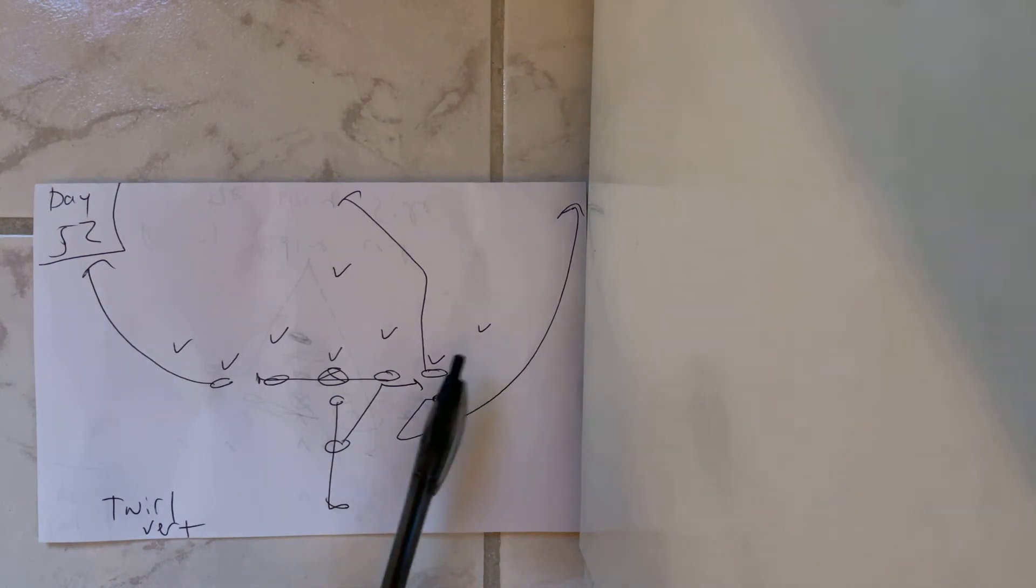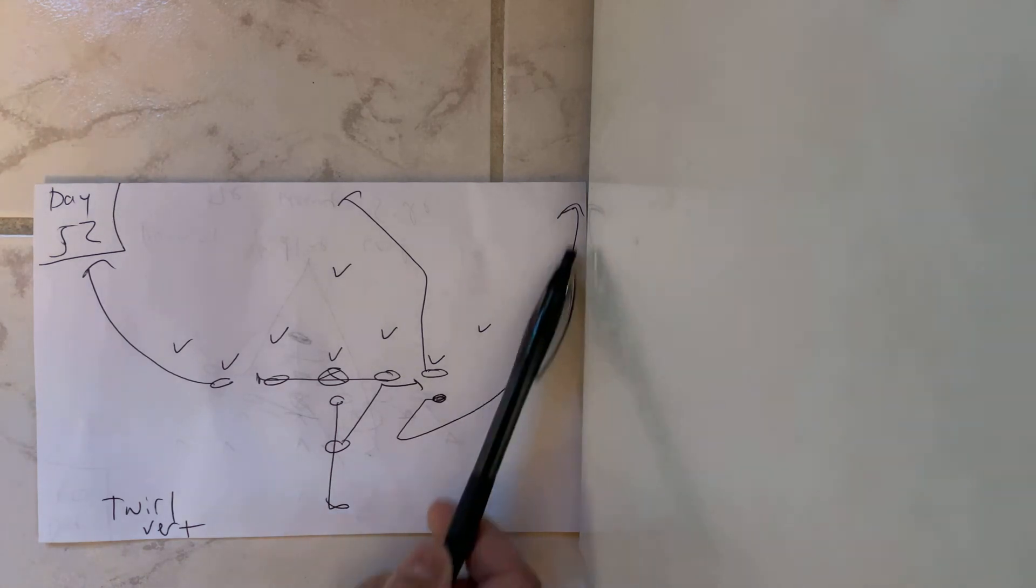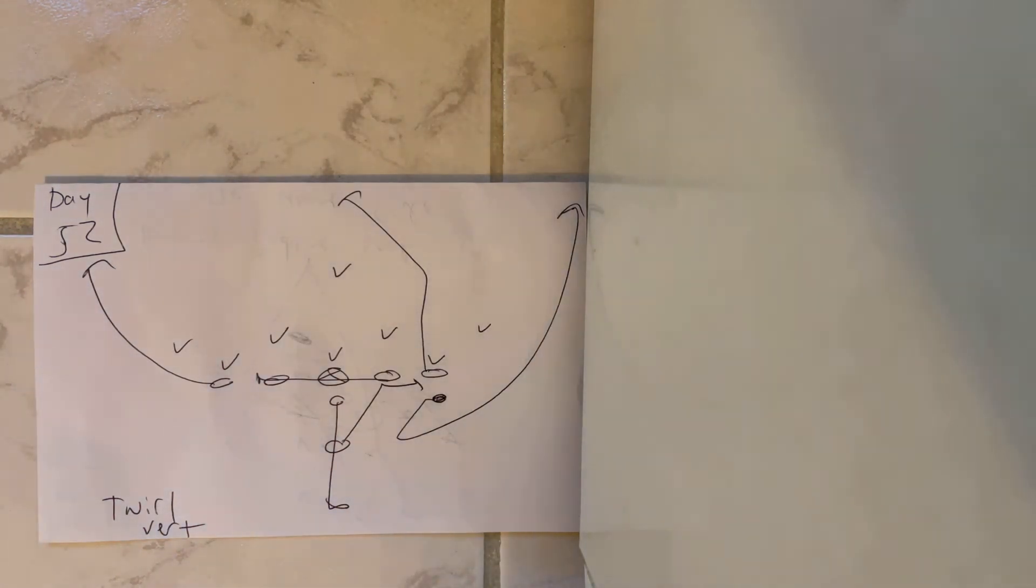And really, because the twirl gives the element of misdirection, and then he comes back and runs the wheel route. On the fifth step, he's going to get rid of the ball and throw it six inches in front of his numbers right here for the score. So a very, very tough concept to defend. Twirl vert is this concept, and there you go.